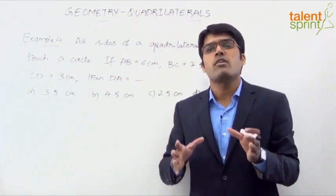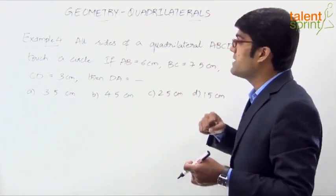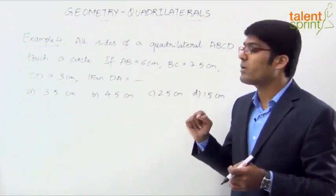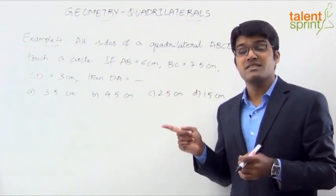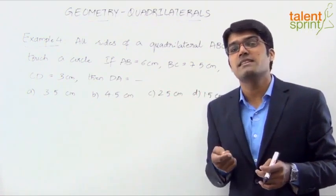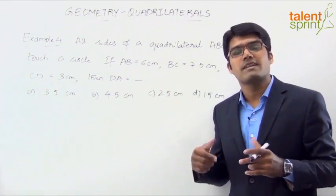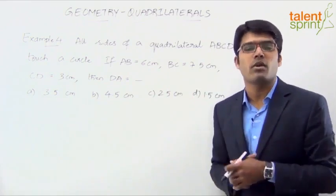What is a cyclic quadrilateral? A quadrilateral inscribed in a circle. But if you look at this question, it says all the sides of a quadrilateral touch a circle, which means in this case the circle is inside the quadrilateral. In the previous case, we have seen that the quadrilateral was inside the circle, but now the circle is touching all four sides. So it can happen only when it is inside the quadrilateral.